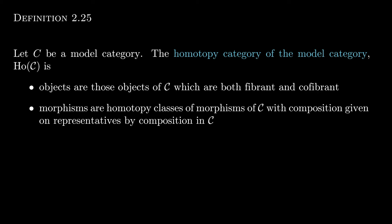We'd like to isolate the homotopy-related parts of a model category. Given a model category C, we write Ho(C) for the category whose objects are the objects of C that are both fibrant and cofibrant, and whose morphisms are the homotopy classes of morphisms of C. These are equivalence classes of morphisms, and the composition of two classes is the class of the composition of the representatives. We call Ho(C) the homotopy category of the model category C.